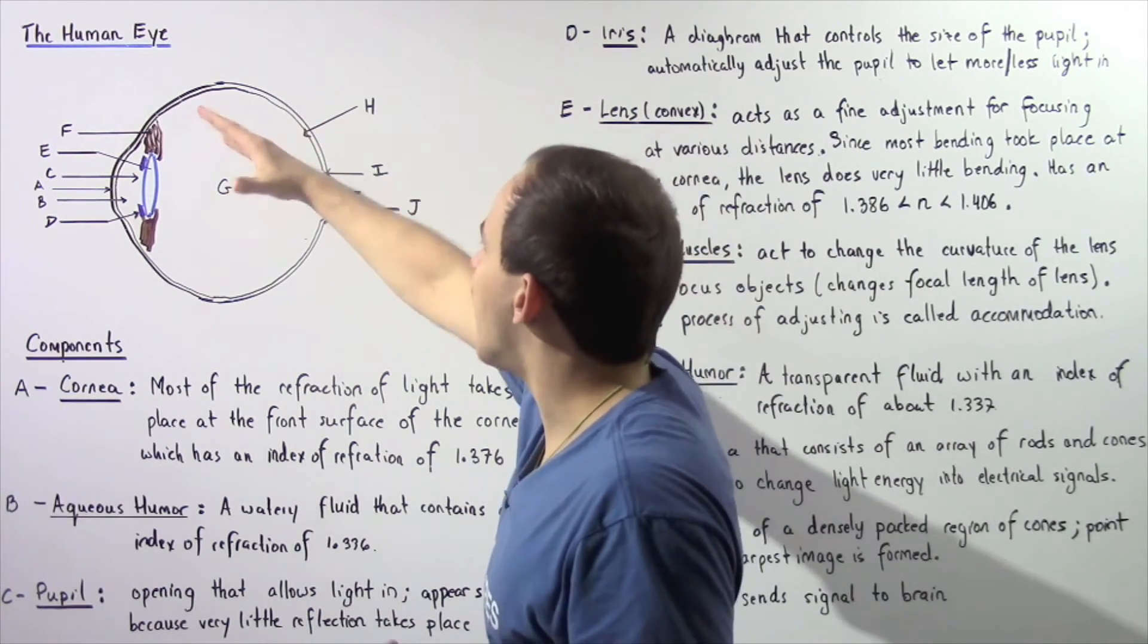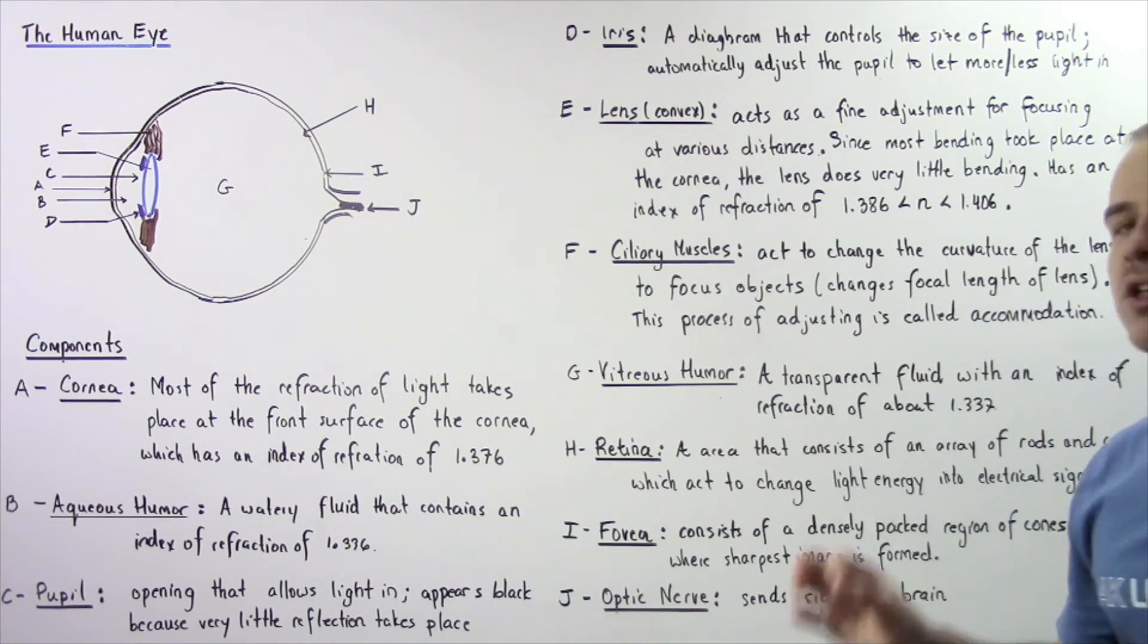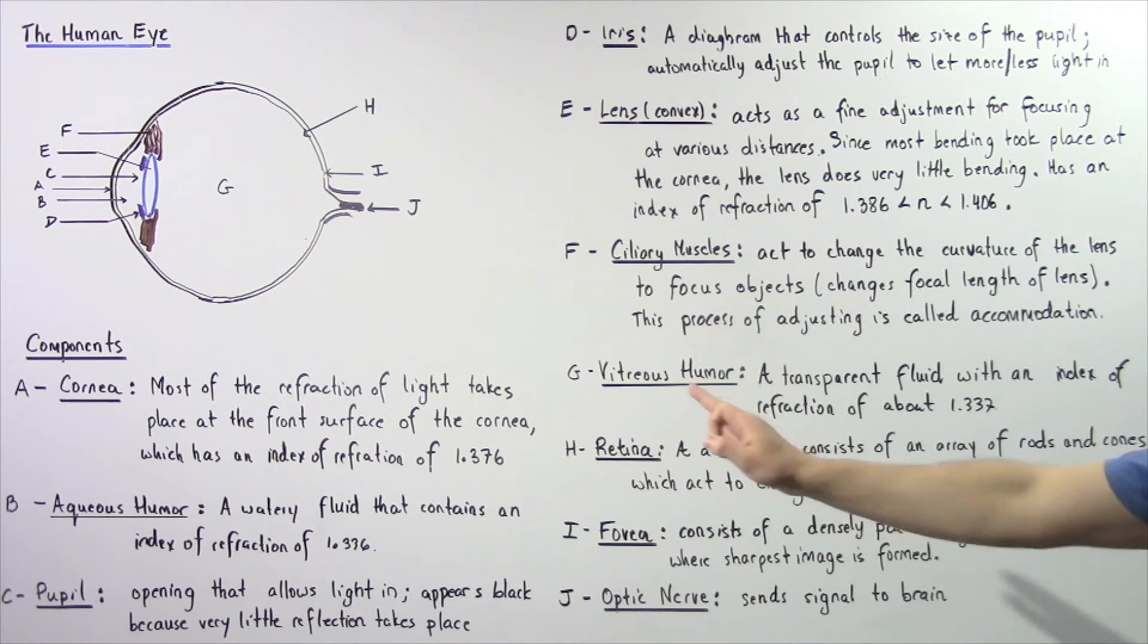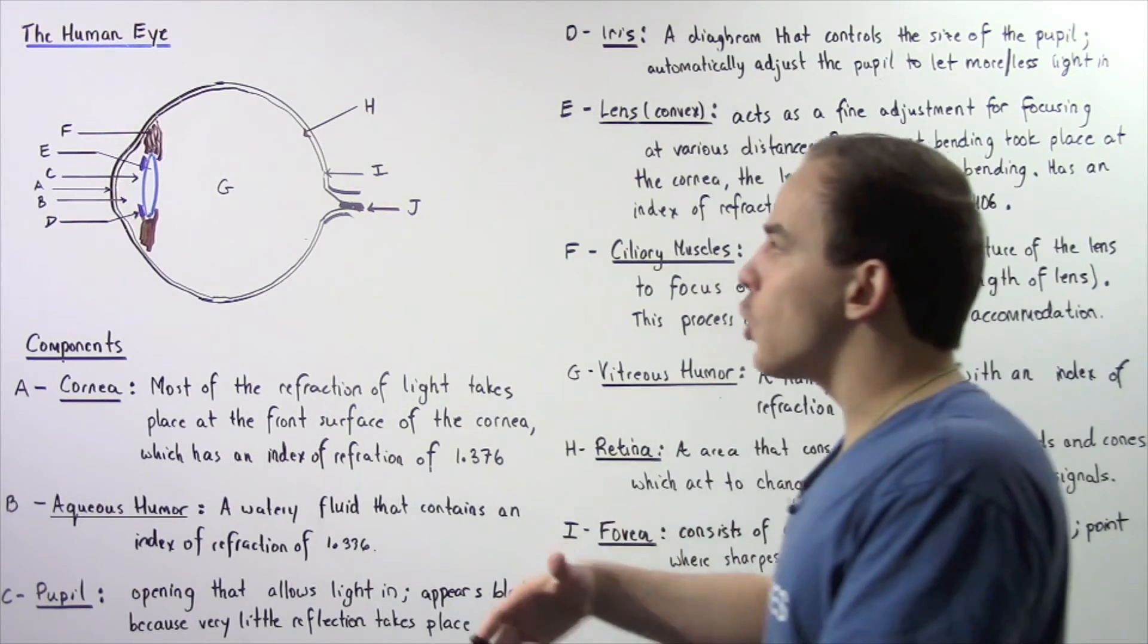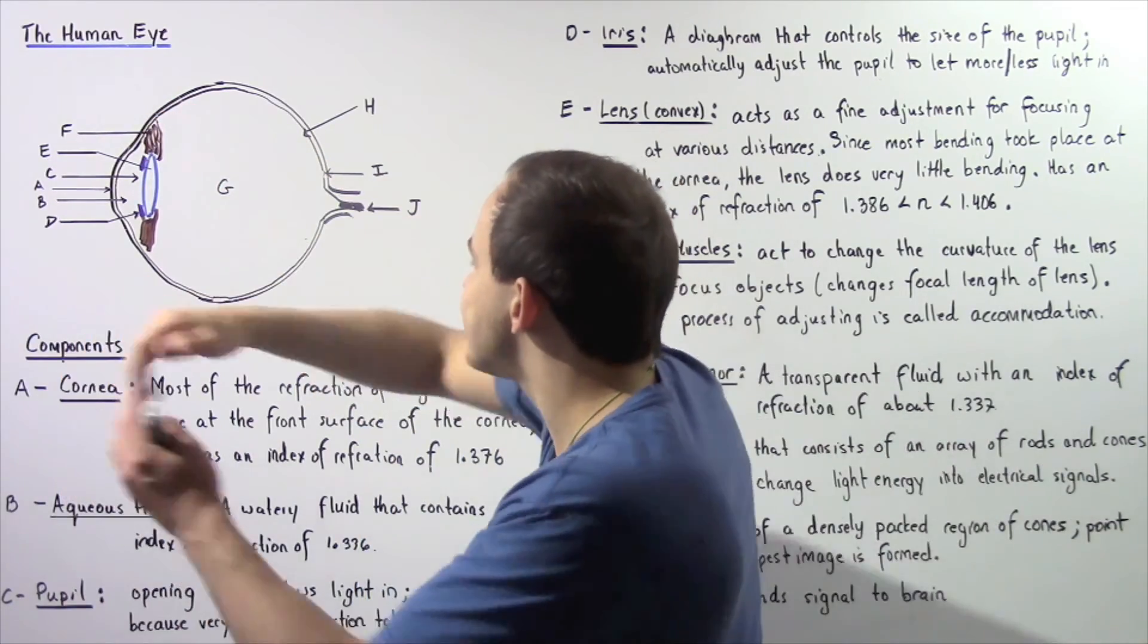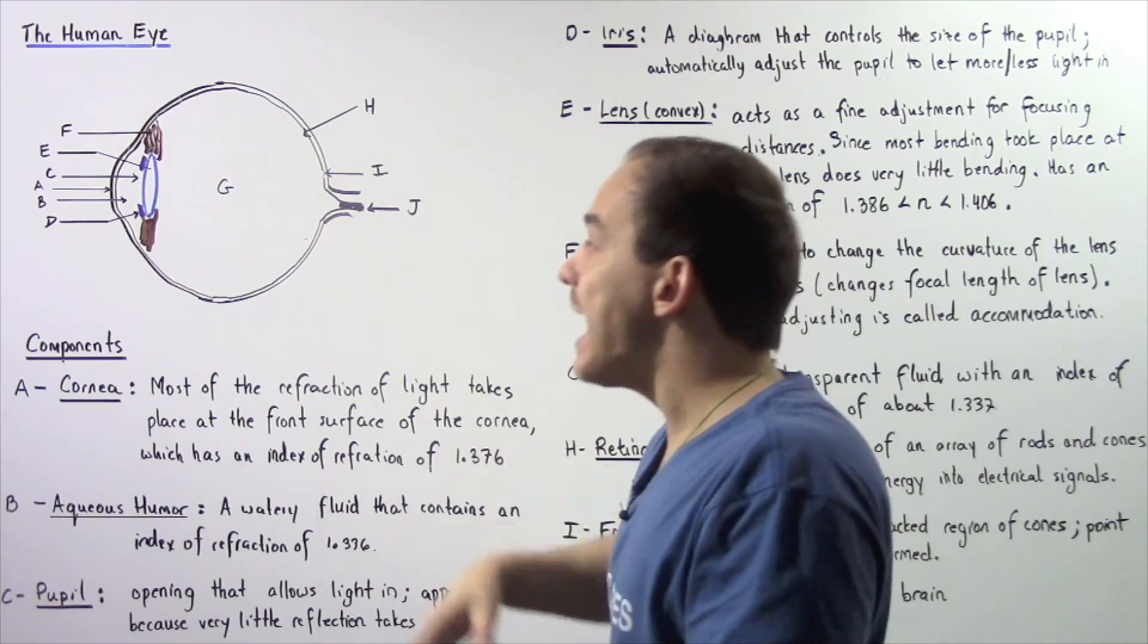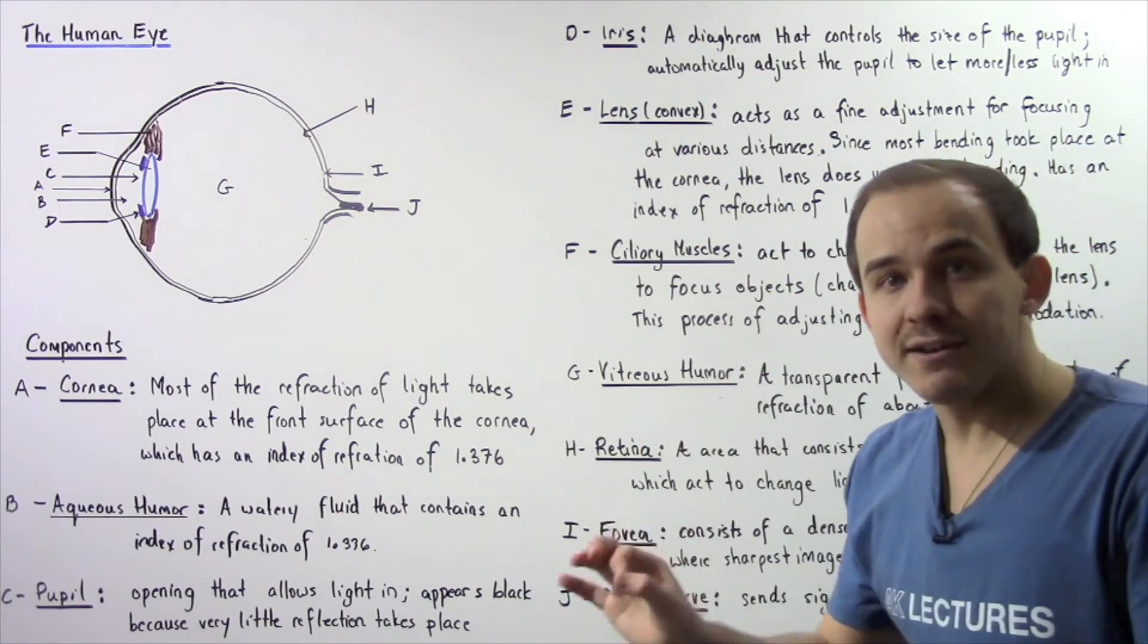Let's move on to a region found on the back of the eye given by H. And this is known as the retina of the eye. The retina of the eye is an area that consists of an array of rods and cones, which are essentially specialized cells that act to change light energy into electrical signals. The light travels through the cornea and the lens, it bends and eventually ends up on the retina. And the rods and cones essentially transform that light, the energy in light, into electrical signals.